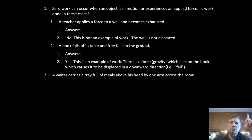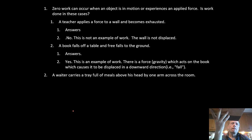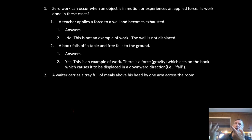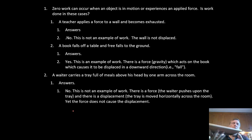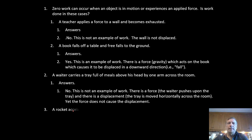A waiter carries a tray above his head across the room. Is work done on the tray? There's a normal force up and gravity down. But there's no force to the left or right, while the tray is moving horizontally. Since no force is applied in the direction of motion, no work is done on the tray.